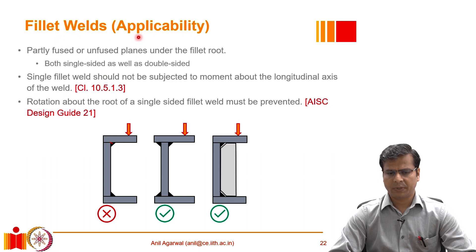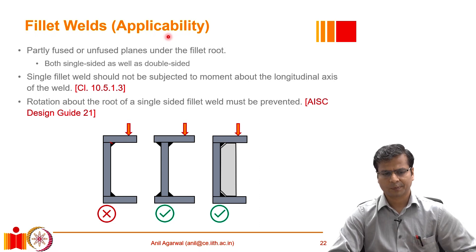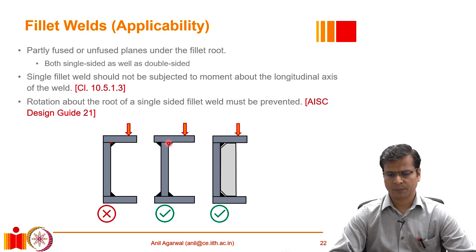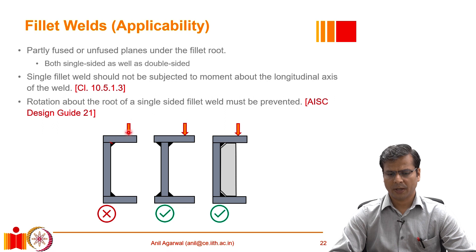Fillet welds behave somewhat similarly to partial joint penetration welds. Since fillet welds join two perpendicular surfaces, there is always a portion of the combined surface that is not fused together — whether the welding is done on one side or both sides. That unfused portion is where cracks can start. For example, in a built-up section, if a load acts on the flange, it can lead to opening of the weld root, which is not desirable because that is where cracks can very easily begin.